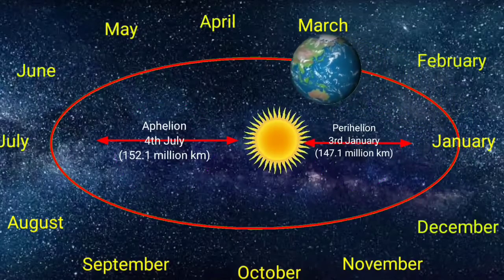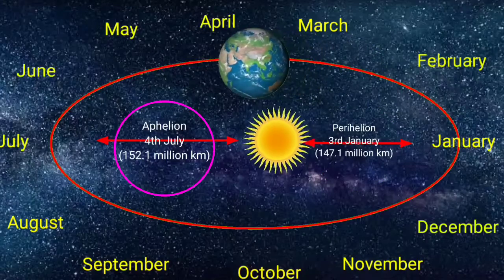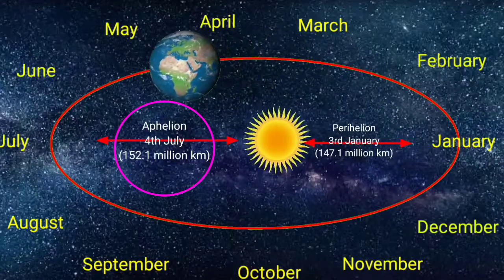And on 4th July, lies farthest from the sun, which is known as aphelion.